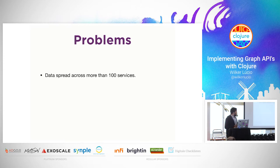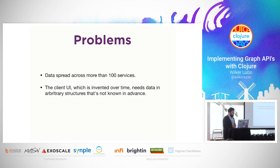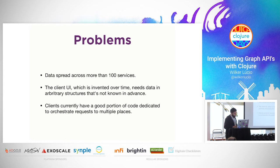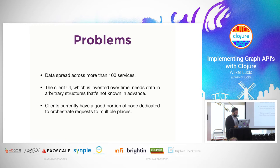One problem is data spread. At Nubank we have more than 100 microservices, so the data is all the way around — it's kind of hard to get what you want when it's so spread. Your UI is going to need the data in some kind of shape, and you usually don't know that shape in advance. You just start writing stuff and somebody says, 'I need some extra data here,' and then you have to pull it out, which is kind of a hurdle. Because of that, your clients have a lot of code dedicated just to fetch this data, orchestrate it, and make it available to display in your UI.